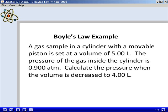In this problem we're going to use Boyle's law. We are told that a gas sample in a cylinder with a movable piston is set at a volume of 5.00 liters. The pressure of the gas inside the cylinder is 0.900 atmospheres. We want to calculate the pressure of the gas when the volume is decreased to 4.00 liters.